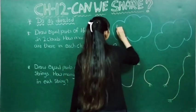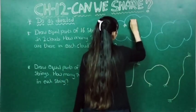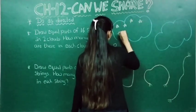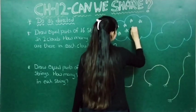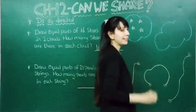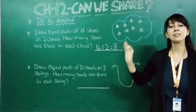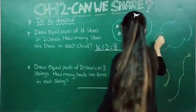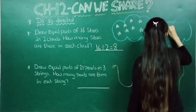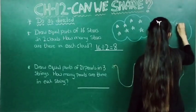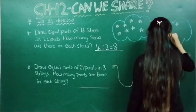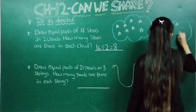So we count one, two, three, four, five, six, seven and eight in the first cloud. Eight stars in the first cloud. Now in the second cloud we also draw eight: one, two, three, four, five, six, seven and eight. We have done — eight eight stars in two clouds.